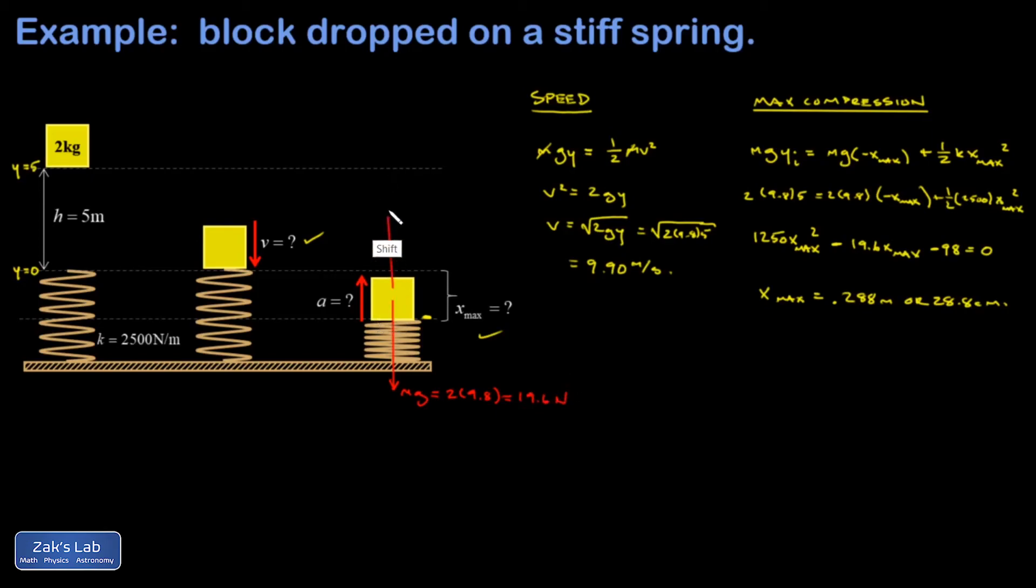And then I have the spring pushing up. And I know the spring force is going to be greater than the force of gravity. This thing is going to bounce up. And my spring force here is going to be kx. So I have 2500 for k and then x is 0.288 meters. And when I crunch the numbers on that, I get 720 newtons.